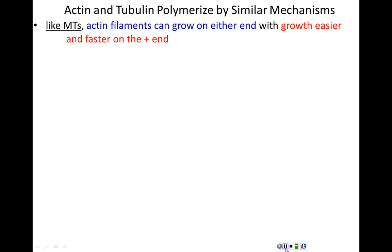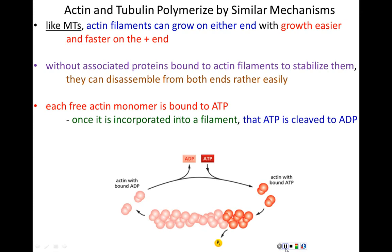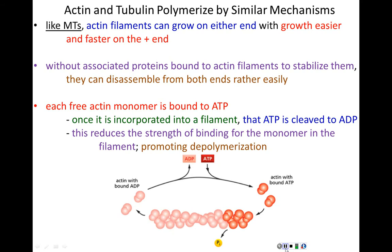Without associated accessory proteins binding to actin filaments, actin filaments become unstable and disassemble rather easily from both ends. Each individual actin monomer is bound to ATP. ATP-bound actin monomers more easily incorporate into a growing filament of actin. Once the actin monomer is part of the filament, the ATP it is carrying is cleaved — now it contains ADP — and ADP-containing monomers have much less affinity for being in the filament, promoting disassembly or depolymerization.